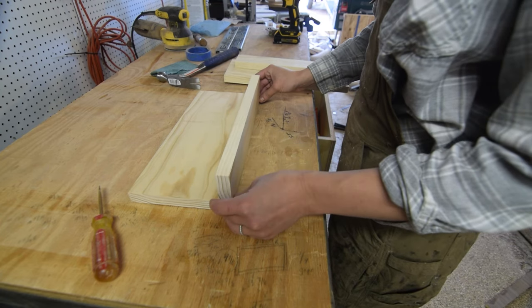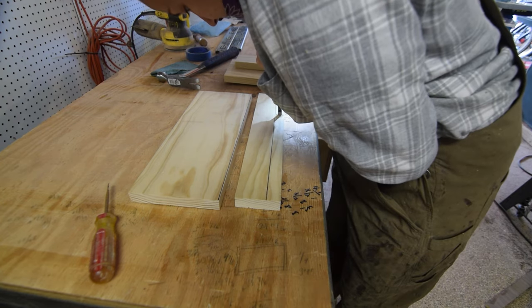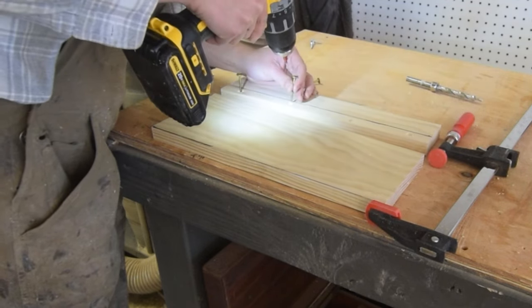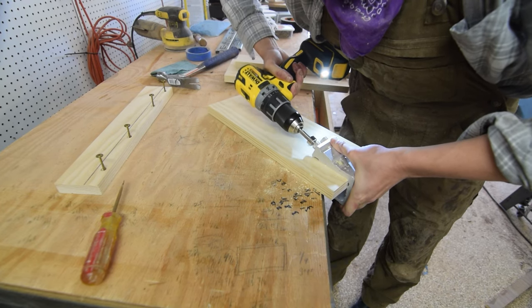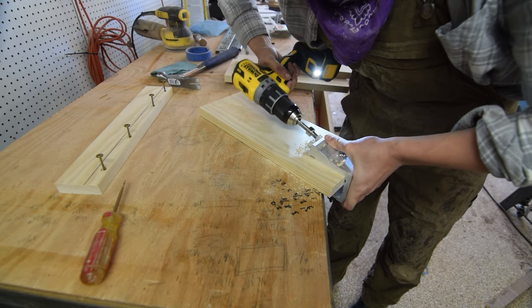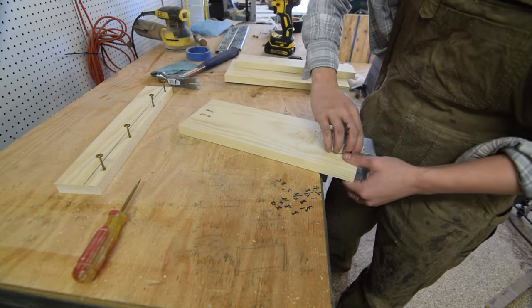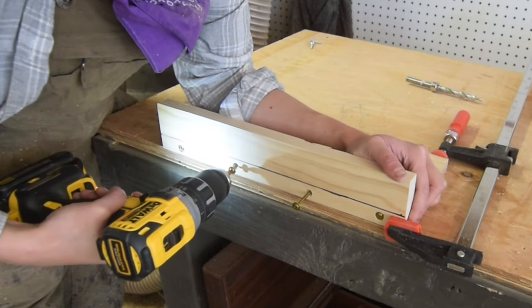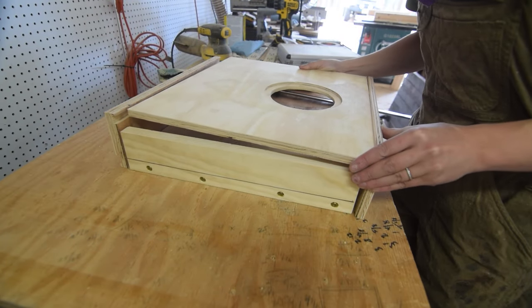To beef up the structural integrity of the bowl drawer, and to provide a surface to mount the drawer front to, I whipped up a couple of these L-shaped brackets. With the pieces assembled, I glued and screwed the crazy contraption together.